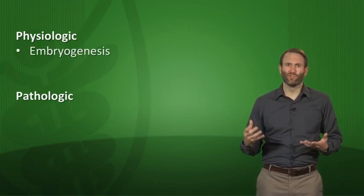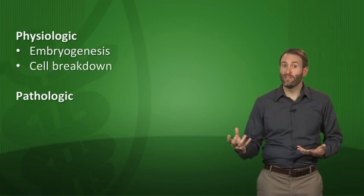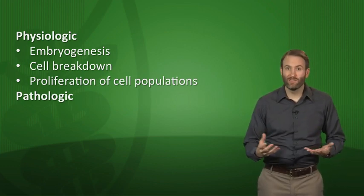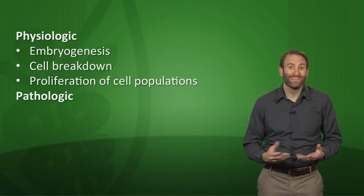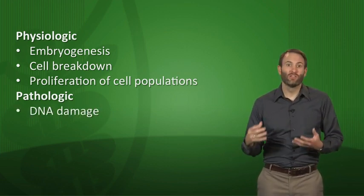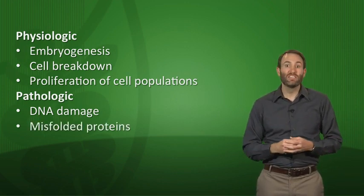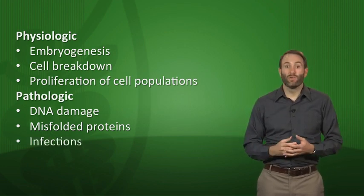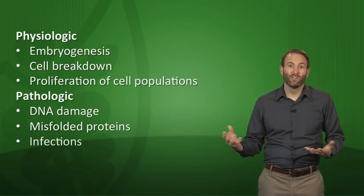What causes apoptosis? There are physiologic situations and pathologic conditions. Physiologic causes include embryogenesis — so we don't all have tails or 12 fingers — cell breakdown during menstruation, and elimination of proliferating cell populations like immature lymphocytes. Pathologic causes include DNA damage through radiation or hypoxia, misfolded proteins from gene mutations or free radicals, and infections like HIV that induce cells to undergo apoptosis.